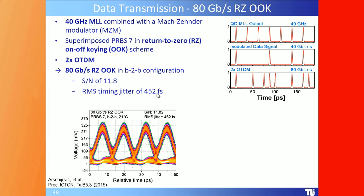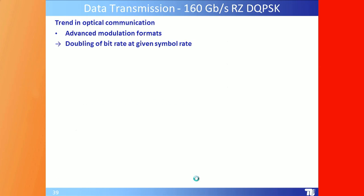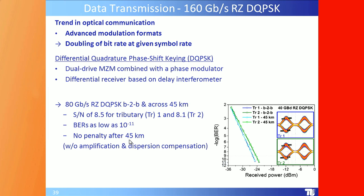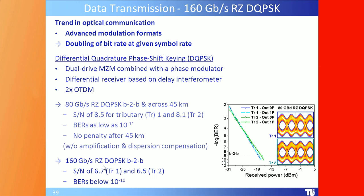Root-mean-square timing jitter of 452 femtoseconds. Using advanced modulation formats such as RZ-DQPSK with a dual-drive Mach–Zehnder modulator combined with a phase modulator and differential receiver based on a delay interferometer, we demonstrate 80 Gbit/s RZ-DQPSK back-to-back with excellent SNR and no penalty after 45 km. We also demonstrated 160 Gbit/s with bit error rates below 10⁻¹⁰.